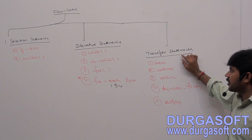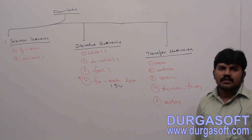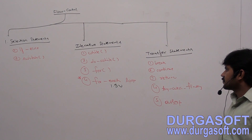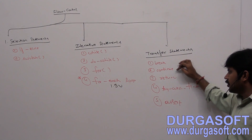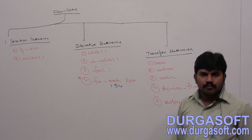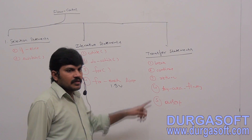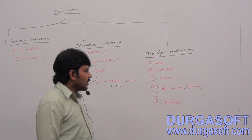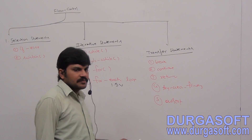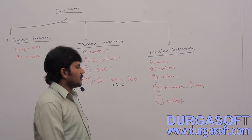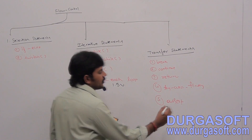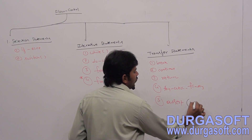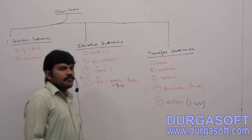Third, transfer statements — used to transfer control from one place to another. Transfer statements include break, continue, return, try-catch-finally, and assert. The assert concept came in Java 1.4 version. So now we have to perform a deep analysis on all these things. Even though these are very basic, there are several loop-related details waiting. Break, continue, return, try-catch-finally, and assert — these are all the various transfer statements.